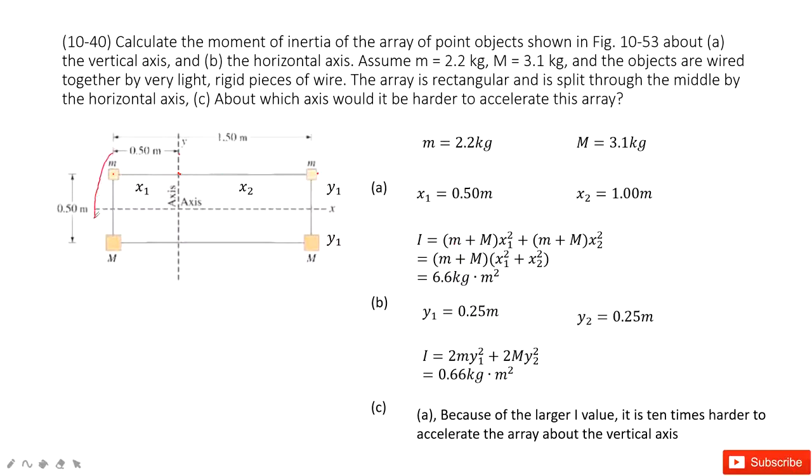This mass is small m plus the capital M times x1 squared plus the small m plus the capital M times x2 squared. And then you can see all the quantities are given. So you get the final answer there.